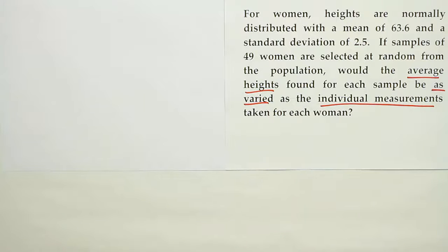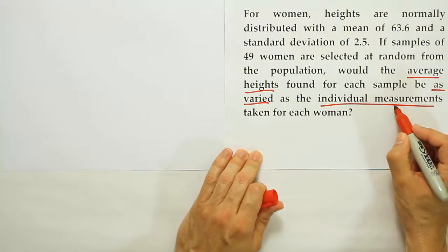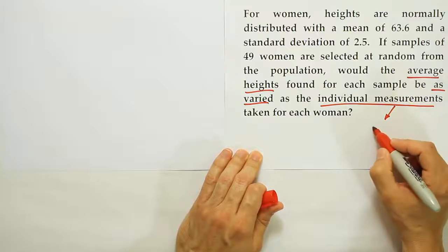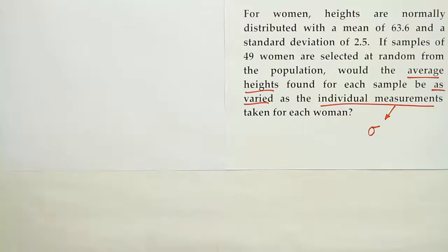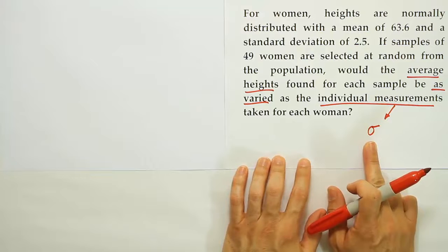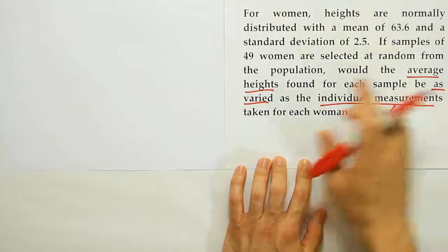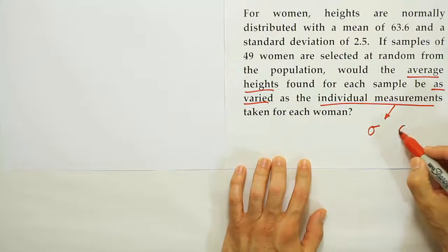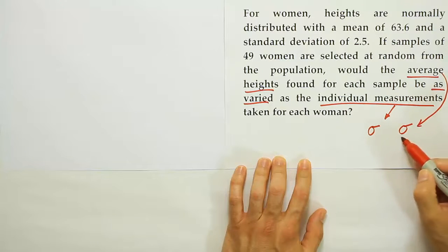Well, let's say that the individual measurements vary by sigma. Let that be the standard deviation, a measurement of the variation in the dataset. If the individual measurements have the standard deviation of sigma, the average heights would have the variation of sigma divided by the square root of n.